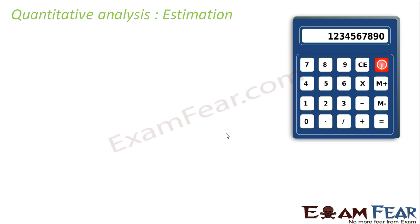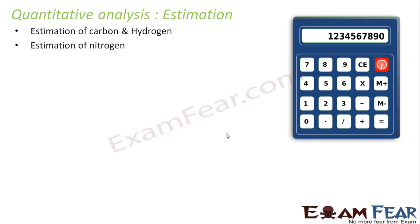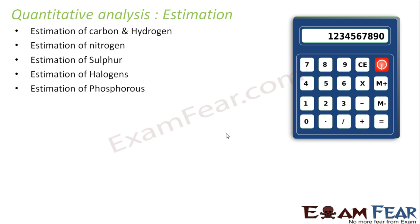But we have not done steps to find the concentration of carbon, because if carbon exists or nitrogen exists, we also want to know how much percentage of the organic compound has carbon and how much is hydrogen. So to estimate that, we will use this method now and we will try to estimate carbon, hydrogen, nitrogen, sulfur, halogens, phosphorus, and we will also try for oxygen.